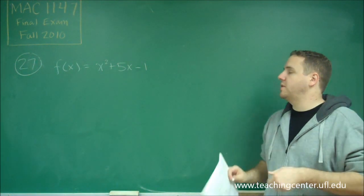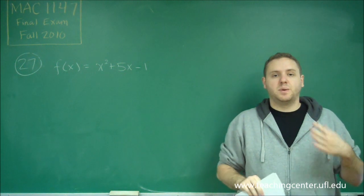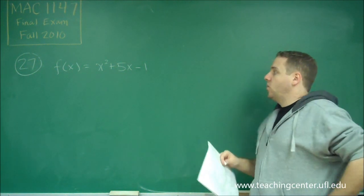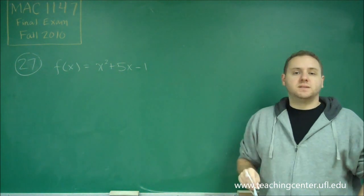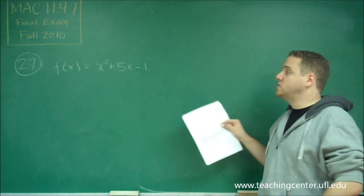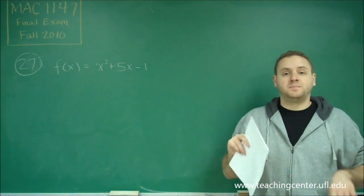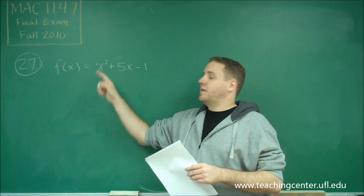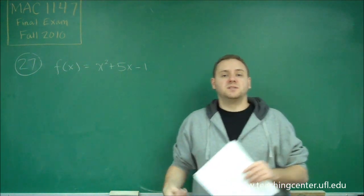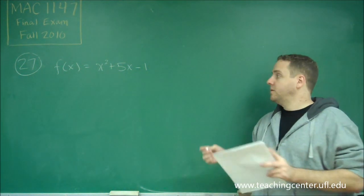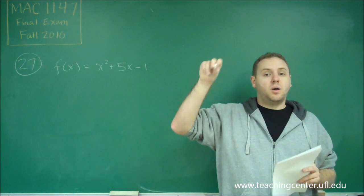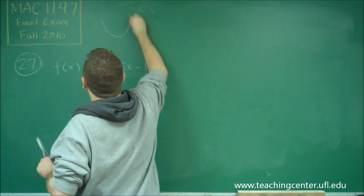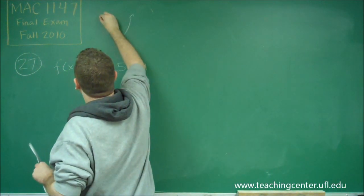To find the range, which means the possible y values that this function can have, we need to recognize what shape this is. A quadratic function is a parabola, and since the coefficient on the x squared term is positive — we just have 1 here — this is a parabola that opens upward.